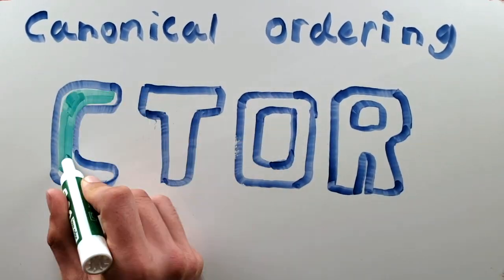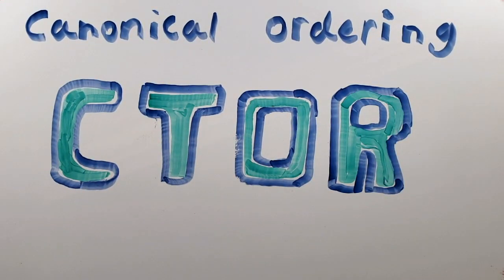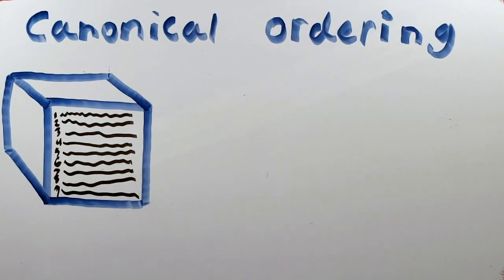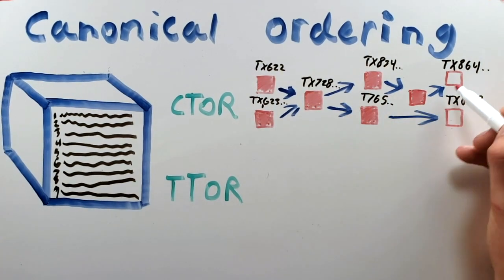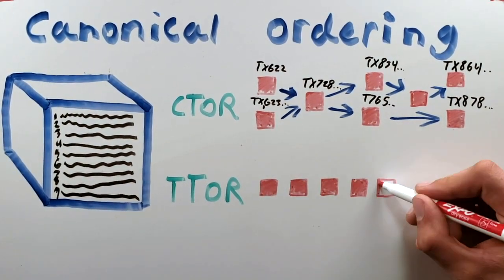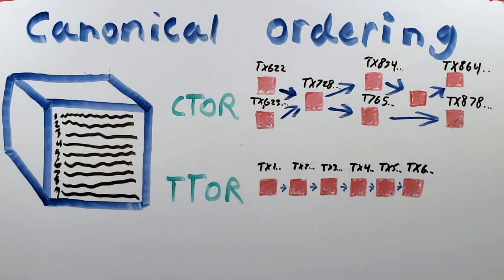Canonical ordering is a change in the way that transactions are ordered in each block. The current ordering is topological. The most important difference to know between the two is that topological can have many different valid orderings, while canonical has only one valid way of ordering transactions in a block. This will become important in just a second.